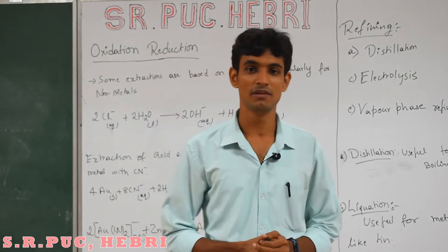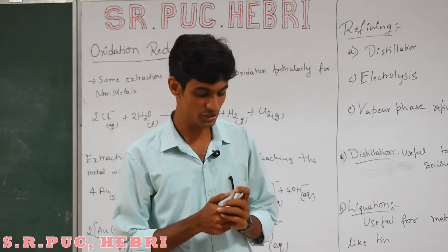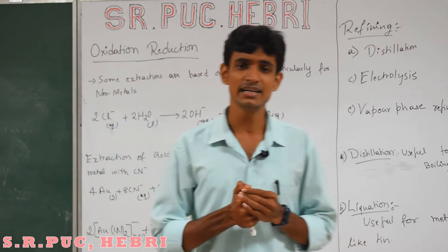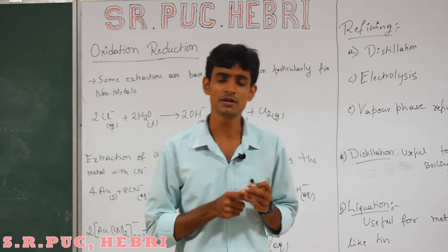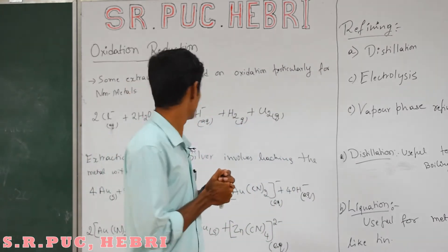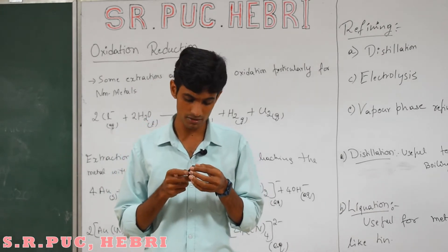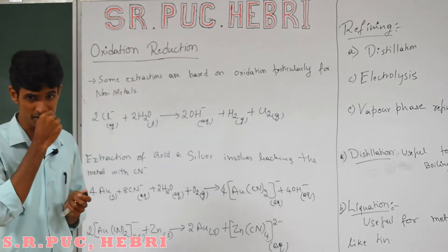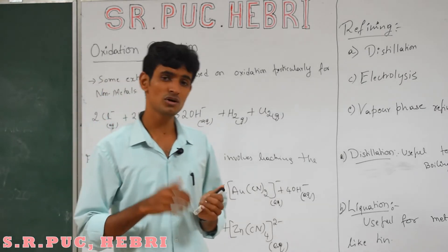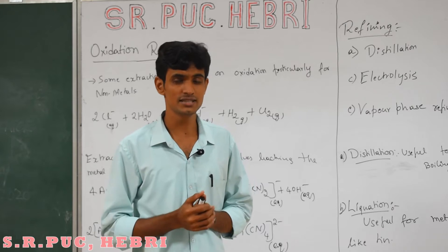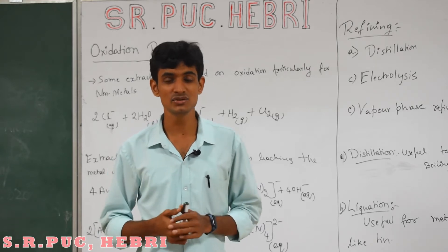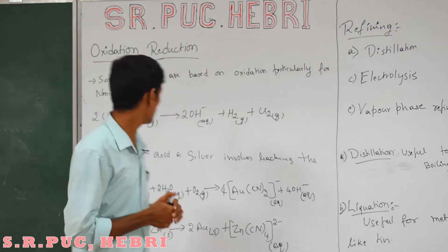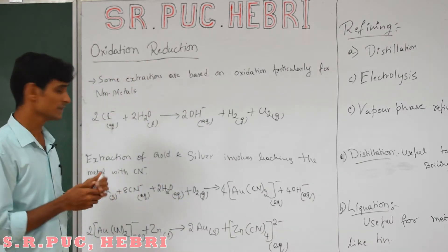Welcome back students. In the last video I was explaining about applications of the Ellingham diagram, and till now we have studied the extraction of metals from their oxides using a reduction method. Now there are some ores or concentrated ores from which metals can also be extracted using oxidation. That is what we are going to discuss here - extraction using the oxidation method.